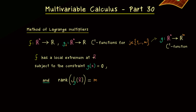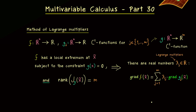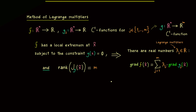Therefore, you can only apply this method in the case that m is less than or equal to n. If we have all of this, we get the implication that we find Lagrange multipliers such that the gradient of f at the point can be written as a linear combination with the gradients of g. Hence, in order to find candidates for local extrema under the constraint, we have to find Lagrange multipliers and the points that satisfy this equation. How this actually works, we now present with an example.